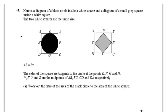The first question shows a diagram of a black circle inside a white square, and a diagram of a small grey square inside a white square. The two white squares are the same size. ABCD is the square, AB equals 8x so the side length of the square is 8x. The sides of the square are tangents to the circle at points E, F, G and H. W, X, Y and Z are the midpoints of AB, BC, CD and DA respectively.